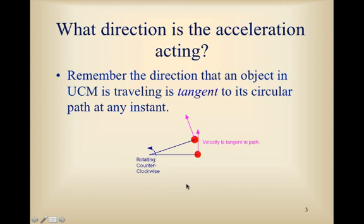So, another reminder here, or review: when we had an object moving in uniform circular motion — in this case going counter-clockwise — going from this location to this location, for example, its speed at this point was perpendicular to the radius, and we call that tangent to that circular path. We notice a moment later that the direction is still perpendicular to the radius and tangent to the circular path. So that's the direction of the velocity vector when an object is in uniform circular motion.